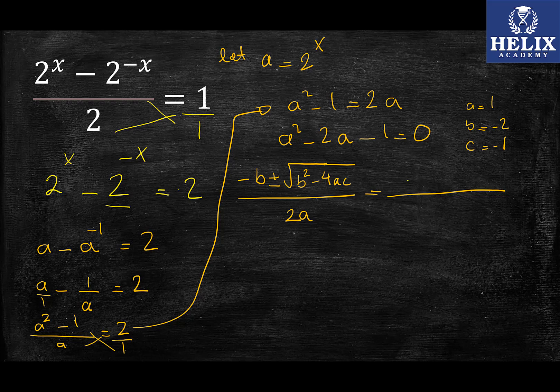Negative b is just going to be 2, plus minus b squared is negative 2 to the power of 2, so that's 4, minus 4 times a, which is just 1, times c, which is negative 1. And then in the denominator, I'll have 2 times 1, which is just 2.